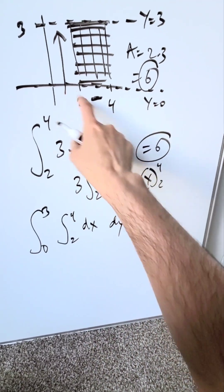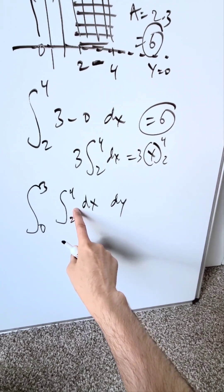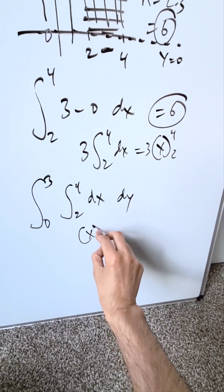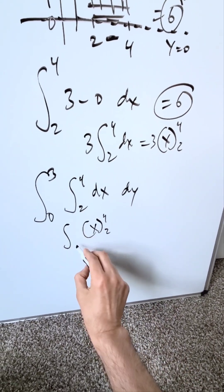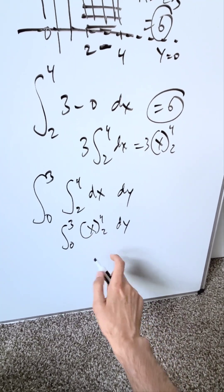We have 2 to 4, and then we're going from 0 to 3, and that's going to give you your area as well. When you do the anti-derivative here, you have an x, and you have 4 and 2, and it's nested with 0 and 3 and dy. You do 4 minus 2, you have a 2.